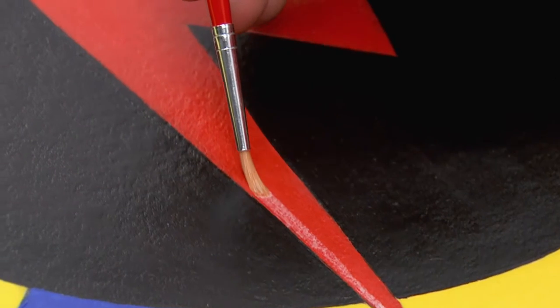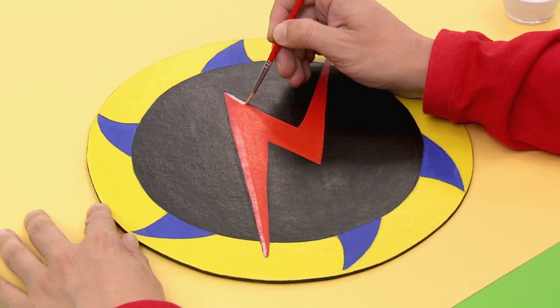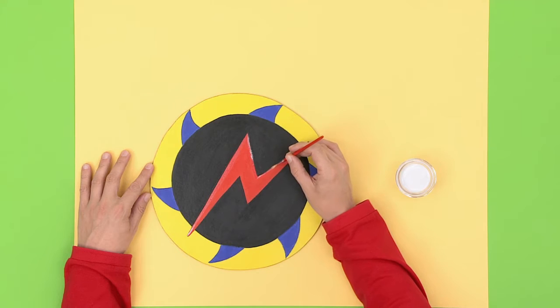Mix the white paint with some water. Use a brush for the thin lines. Outline the teeth of the lightning in the circle.